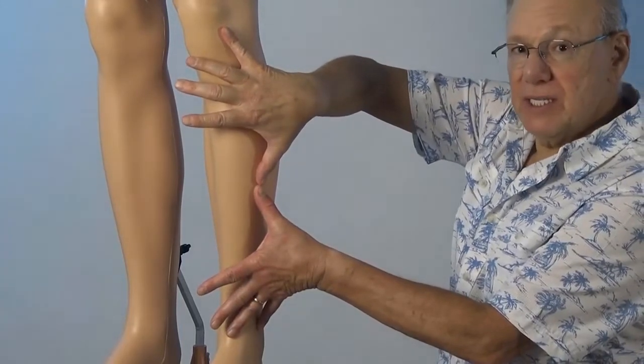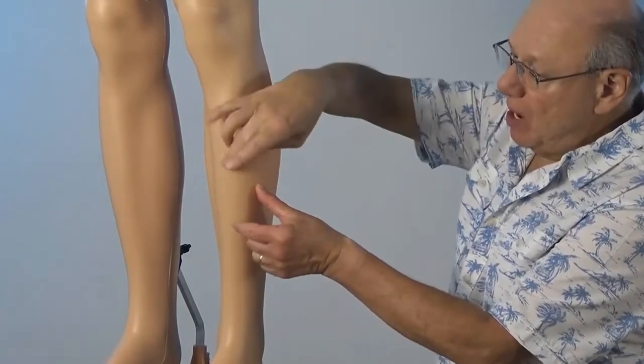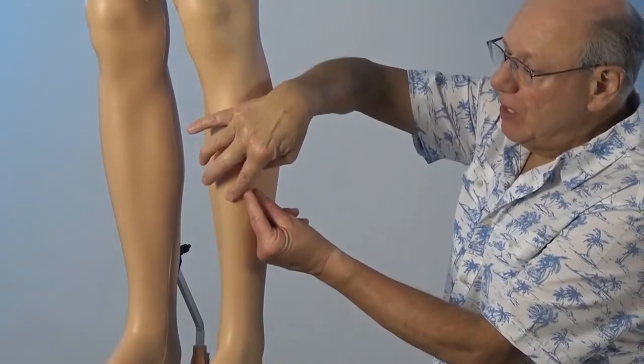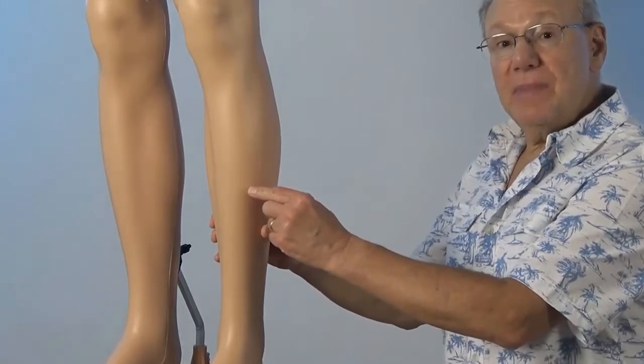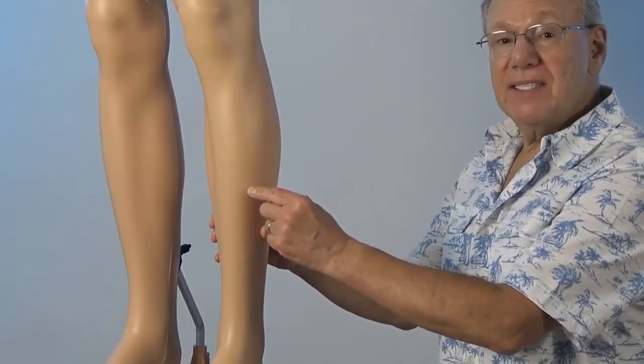Where your thumbs come together is the midpoint. Take a spot that is about two finger widths to the side of the center. Press in there. There's going to be a tender spot that is Stomach 40.